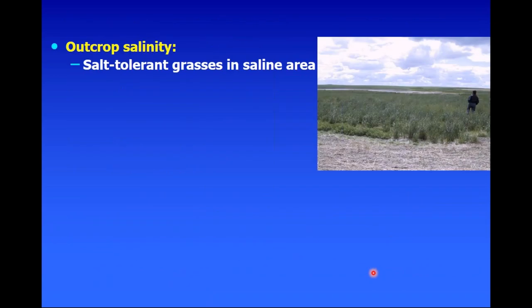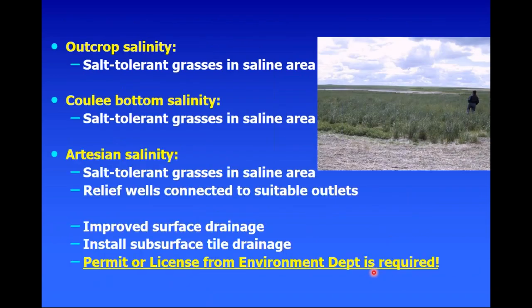For depression bottom salinity and slough ring salinity, the discharge areas again benefit from establishing salt-tolerant grasses, preferably deeper-rooted, in a range of 30 to 100 meters around that depression bottom, depending on the size of the discharge area. Beyond that, maybe seeding alfalfa in another band 50 to 100 meters wide around that area to soak up extra groundwater and prevent excess water from moving down to the water table. In cases of no-crop salinity, coulee bottom salinity, or artesian salinity, it's often very difficult to identify the recharge area.